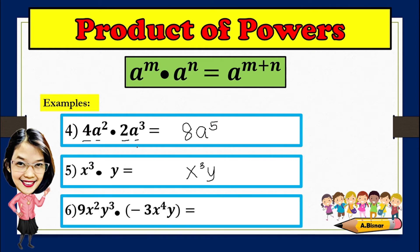For number 6, 9x squared y cubed times negative 3x to the fourth y. Let us start by multiplying the numerical coefficients, which are 9 and negative 3. 9 times negative 3 is negative 27. We have two variables, x and y. Let's add the exponent of x: 2 plus 4 is 6. Then for y, add the exponents: 3 plus 1 is 4. So the answer will be negative 27x raised to the sixth, y raised to the fourth power.